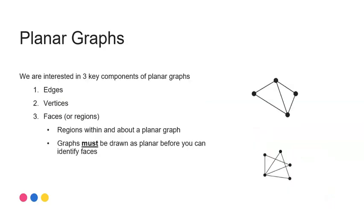Once we've been able to draw our graphs as planar, there are three key components that we want to be able to take note of. So edges and vertices we are already familiar with. Remember the edge is the line representing the connections between the vertices and the vertices are the points on the graph, often representing a person or a place or an object.